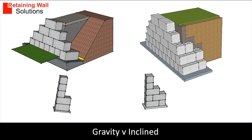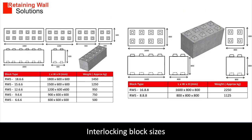Gravity block walls laid vertically use more blocks than inclined concrete blocks, as you can see. The blocks come in 600 and 800 millimeter widths and heights. The standard length for a 600 millimeter block is 1.8 meters, and 1.6 meters for the 800 millimeter block.